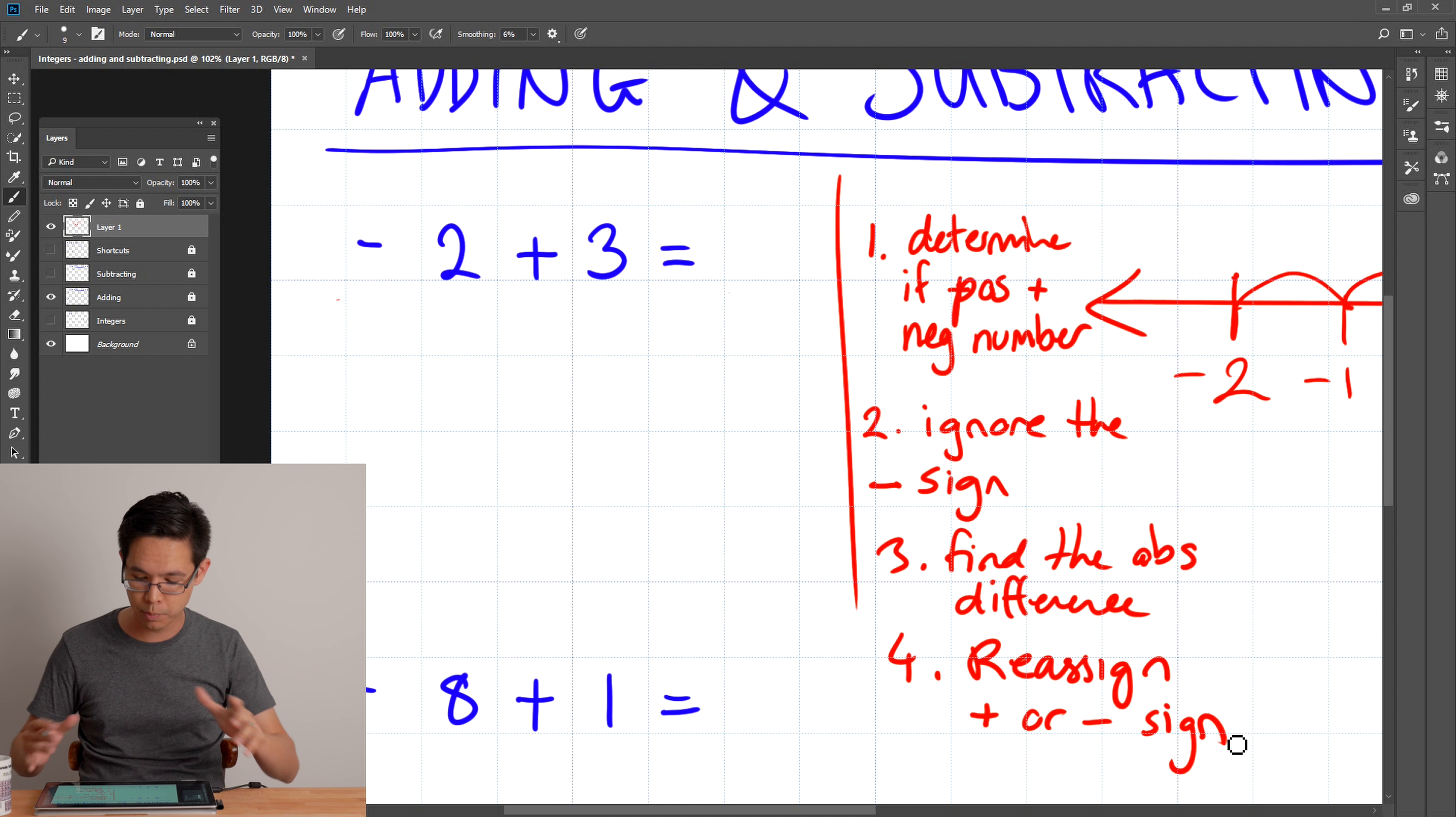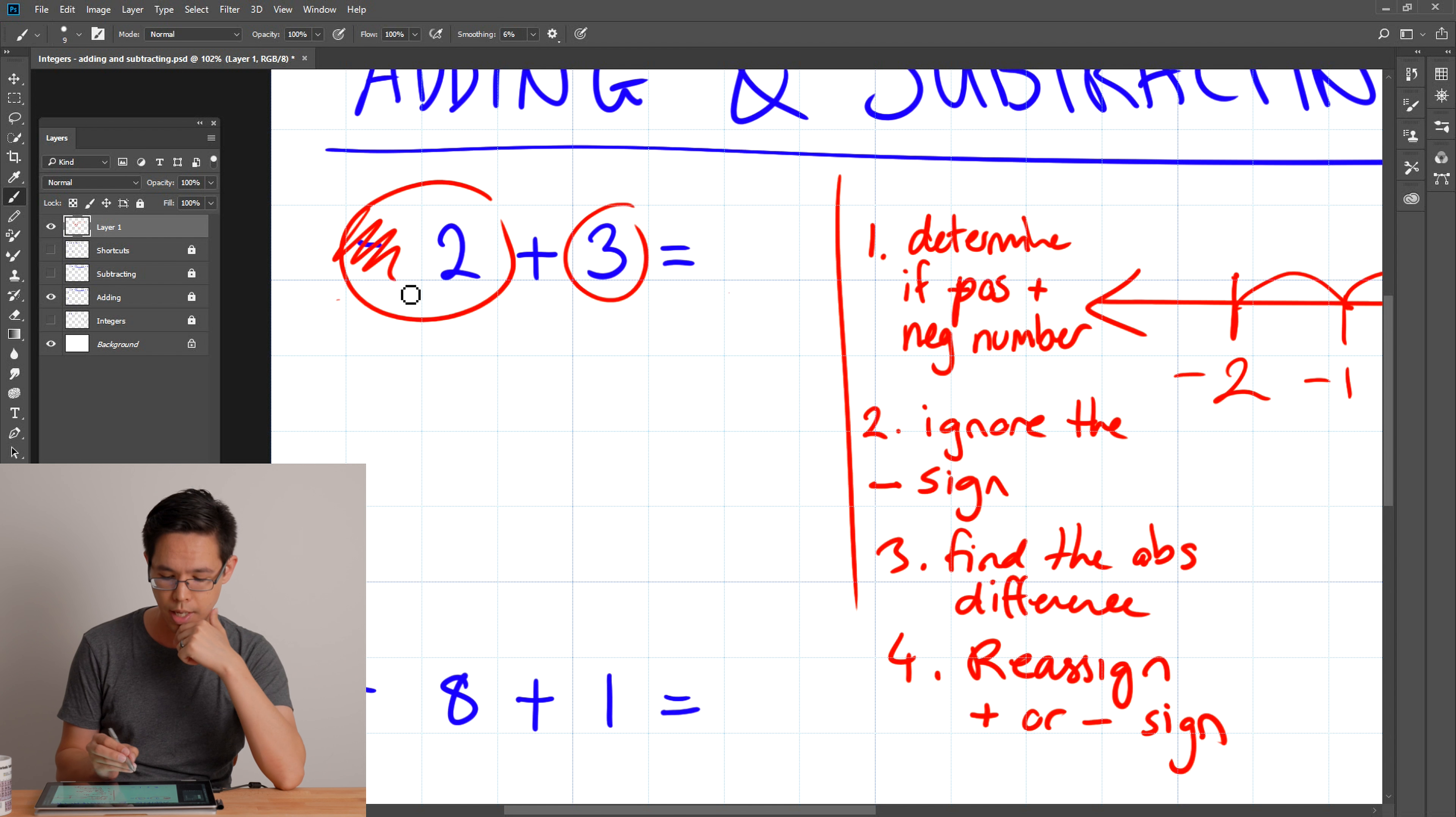So this is the thinking that's going through my head. Do I have a positive number and a negative number being added together? Yes, I do. I've got negative two and I've been adding positive three to it. So yes, it satisfies the first step. The next step is to ignore the plus and minus signs. So I'm going to ignore for now that negative and then just work with this problem. Next one is to find the absolute difference between the two numbers. What's the absolute difference? That's what's the difference between two and three, ignoring the signs. The answer is one.